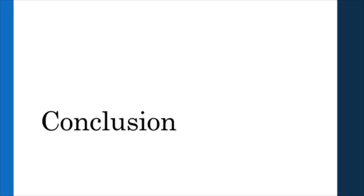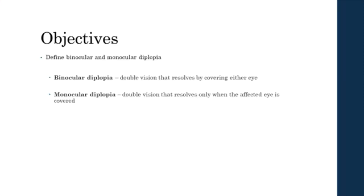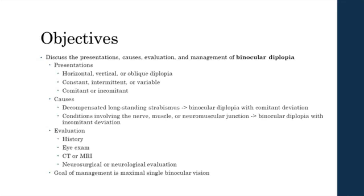We are at the conclusion of our discussion of binocular and monocular diplopia. In summary, we have defined binocular diplopia as double vision that resolves by covering either eye, and monocular diplopia as double vision that resolves only when the affected eye is covered. Binocular diplopia can present as horizontal, vertical, or oblique diplopia that is constant, intermittent, or variable, and comitant or incomitant. Binocular diplopia with comitant deviation is caused by decompensated long-standing strabismus, while binocular diplopia with incomitant deviation can be due to conditions involving the nerve, muscle, or neuromuscular junction.